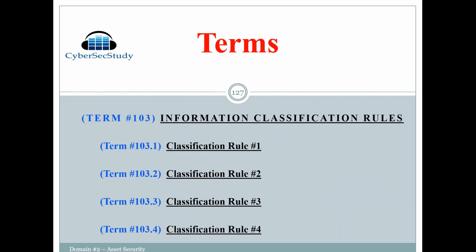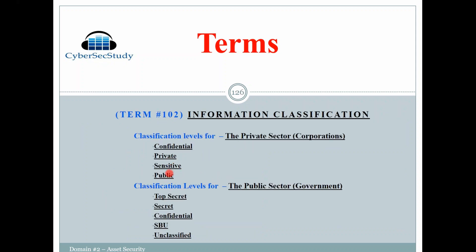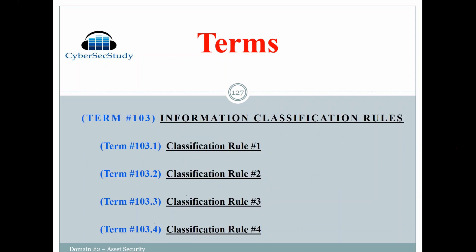We have some rules for how to classify information. Classification rule number one: too many classification levels will be impractical and add confusion. Looking at the private sector levels, three or four is the best number. If you had seven, eight, or nine different levels, it's going to be hard to know which classification to put information into. Similarly in risk assessments, I prefer just three categories — high, medium, or low — rather than very high, high, medium, low, very low, which is too many levels and adds confusion.